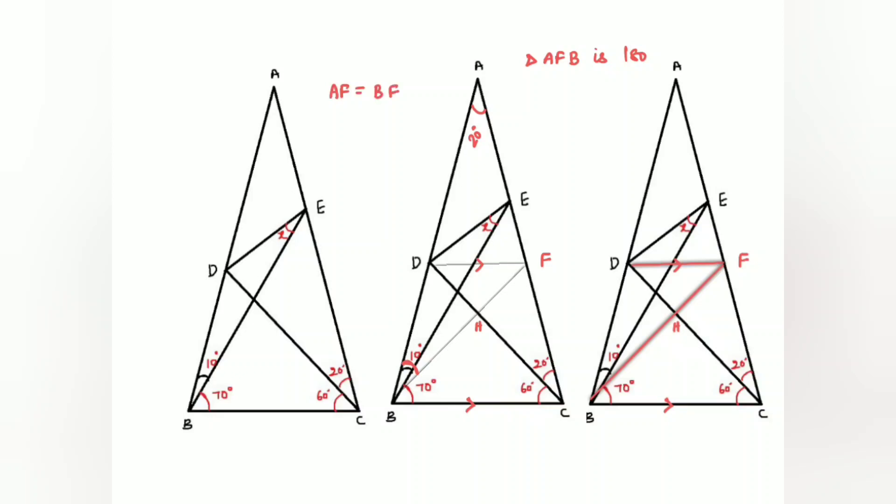Now draw a line from A to H. Since it's an isosceles triangle, it divides the angle into two equal parts. This is 10 degrees here, and this is also 10 degrees here.